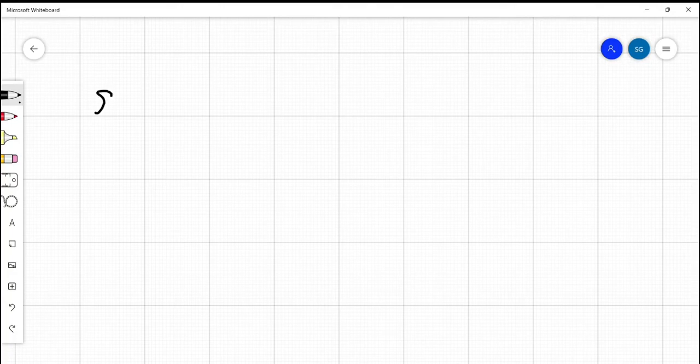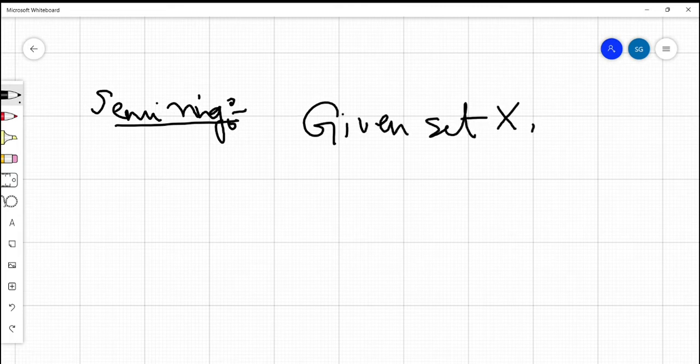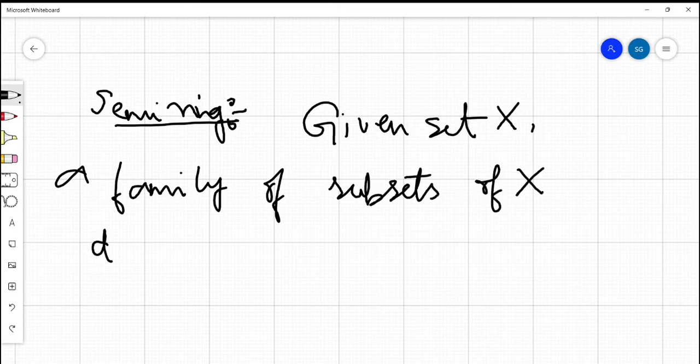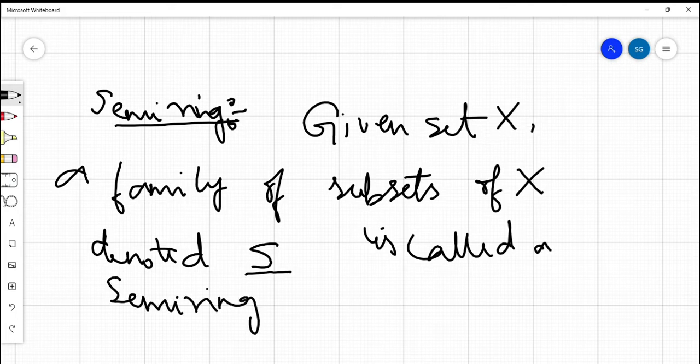So, let me define what is called a semi-ring. Given any set X, a family of subsets of X, denoted with the letter S, is called a semi-ring if it satisfies the following three properties.